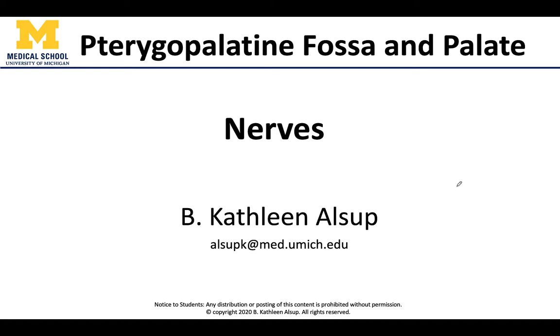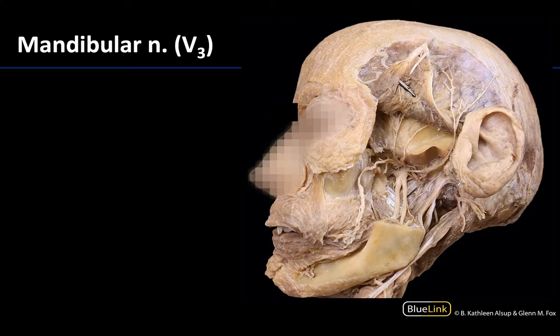Starting with a quick review of the location of the bulk of the mandibular nerve or V3, which is basically here, and you can see the expanse of the branches of V3.